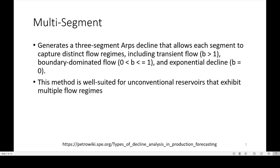Next I'll talk about is the multi-segment. You're generating a three-segment ARPs decline that allows each segment to capture distinct flow regimes, including transient flow, boundary-dominated flow, and exponential decline. This method is well-suited for unconventional reservoirs that exhibit multiple flow regimes.